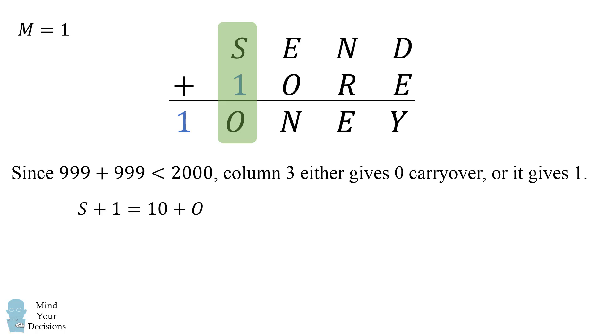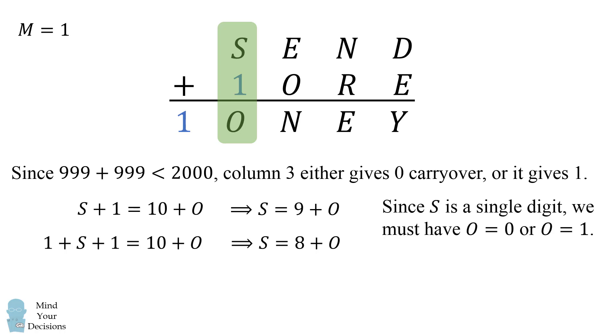So we can work through the cases. If there's no carryover, we have S plus 1 is equal to 10 plus O. This would imply that S is equal to 9 plus O. In the other case where we have a 1 carryover, we have 1 plus S plus 1 is equal to 10 plus O, and this implies that S is equal to 8 plus O. Since S is a single digit, we must have O is equal to 0, or O is equal to 1. Anything larger would produce something larger than 9.